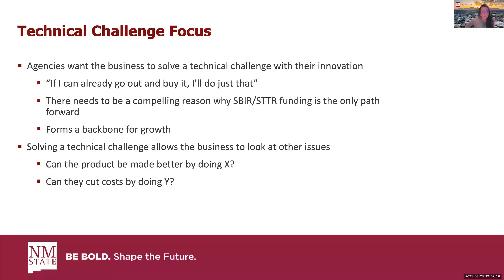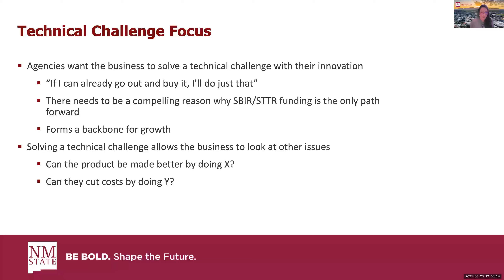Usually it's so early stage that you can't get any other funding other than maybe debt financing, which small businesses don't always want to incur to develop a technology. SBIR and STTR programs are usually funding a business far before you'll be eligible for angel investment or venture capital. And it forms a background for growth — once you get SBIR funding, you're able to use it to grow and scale your business by moving that technology closer to commercialization. Solving that technical challenge through your innovation also allows you to look at other issues, like whether you can cut costs or make the product better.